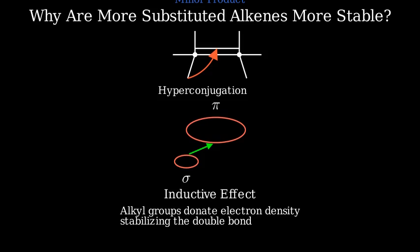Second, there's the inductive effect. Alkyl groups are weak electron donors that can stabilize the electron density of the double bond through this effect.